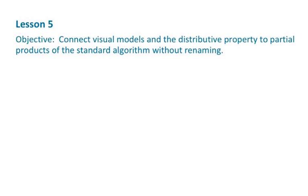This is grade 5, module 2, lesson 5, and the objective in this lesson is to connect visual models and the distributive property to partial products of the standard algorithm without renaming. Okay, so it seems like a very complicated objective, and it's actually not. So I'm going to show you a few examples of this, but using the homework problems.